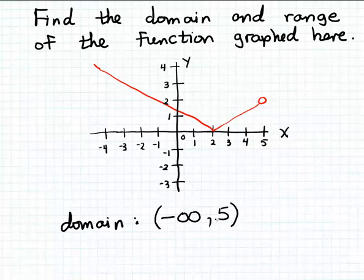So here's our domain. It's all real numbers between negative infinity and positive 5, not including positive 5. So you could also say the domain is real numbers less than positive 5.